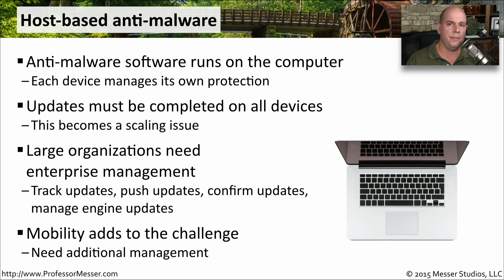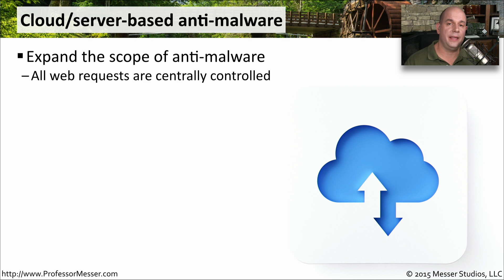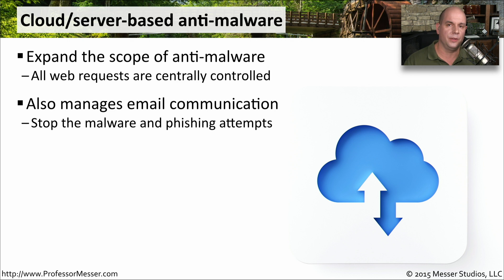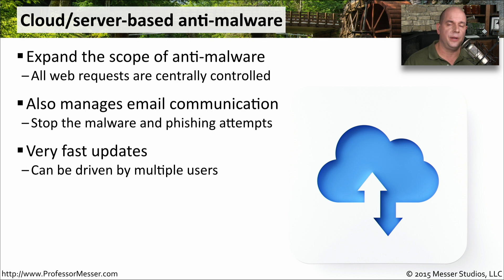There are usually other layered security methods you can use to manage your anti-malware presence. One way is to have the anti-malware in the cloud. Instead of running something exclusively on your local system, you could have something in the cloud examining all of the queries you're making out to servers and the responses coming inbound to your device. This is very often used for email communication, since it's easy to send all of your email to one central anti-malware server in the cloud to be examined. This also provides for very fast updates — you can update one place in the cloud and now you're covering all communication going inbound and outbound from your network.